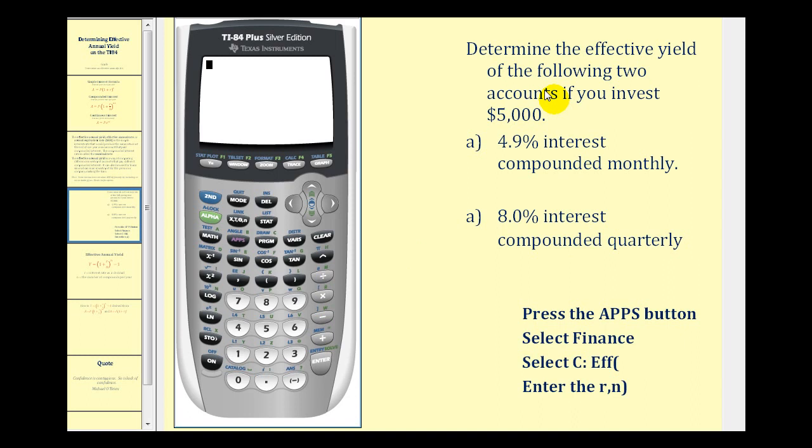Here you're asked to determine the effective annual yield of the following two accounts if you invest $5,000. And the one thing you'll notice about the formula for the effective annual yield is it doesn't require the initial amount or the principal.